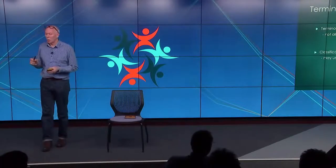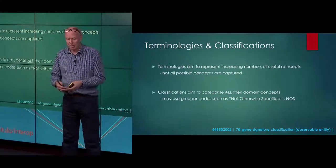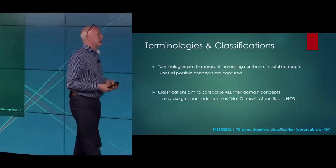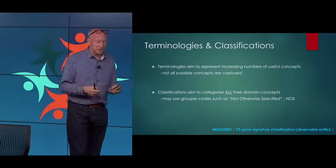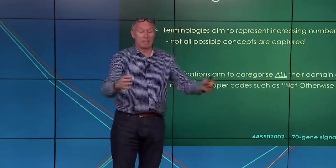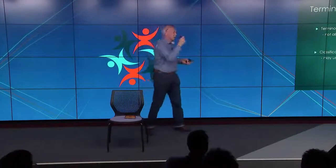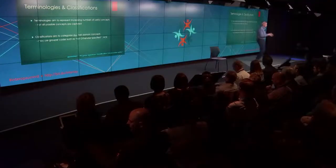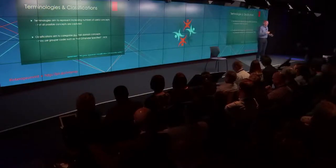A terminology aims to represent increasing numbers of useful concepts, but can't capture all concepts. Classifications, on the other hand, aim to categorise all concepts in their domain — so for myocardial infarctions, you'd have anterior, posterior, lateral, and a bin for the rest — sometimes labelled NOS (not otherwise specified). The problem with that bin is that subsequently you might want to recategorise items into formally described concepts, which can play havoc with your statistics.